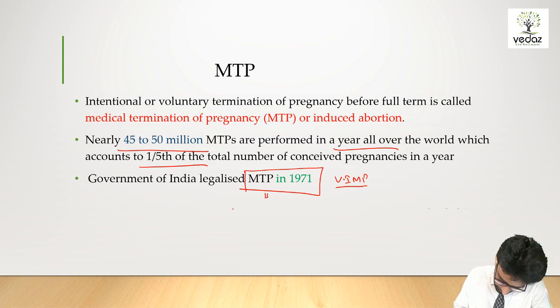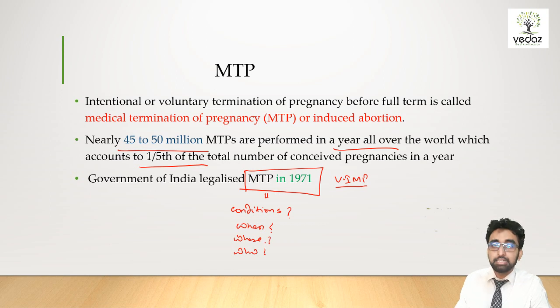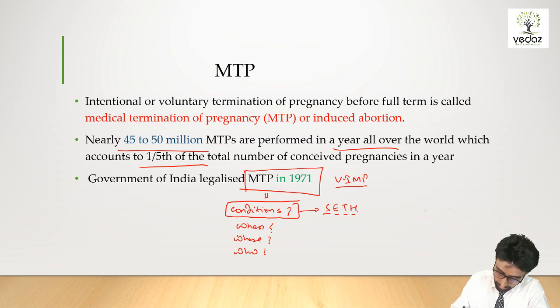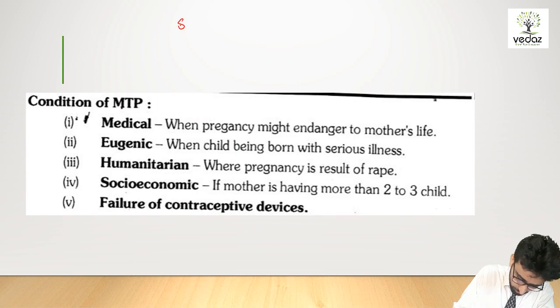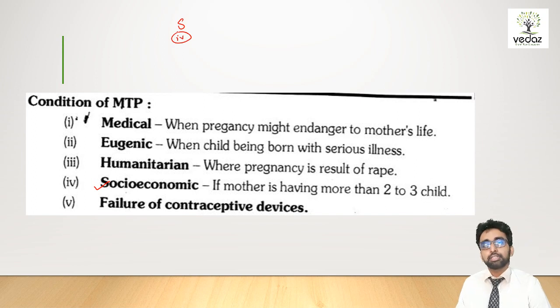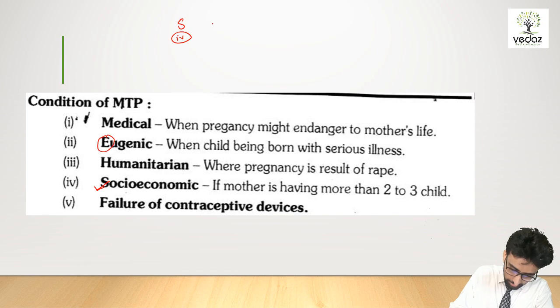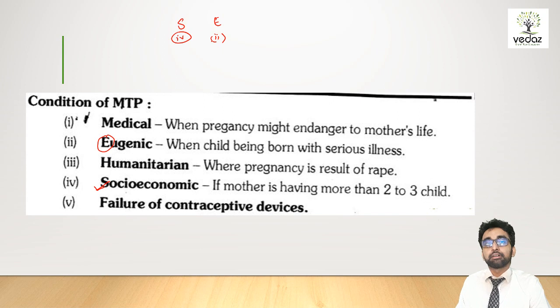What does this act say? It defines the conditions in which you can do MTP, where it can be done, when it can be done, who can do it, what qualifications are required. First time, in which condition you can do MTP: this is the mnemonic SET. S is for socio-economic condition. The lady is saying that my family is already complete, I don't want to continue this pregnancy. E is eugenic, means the child has some serious illness.